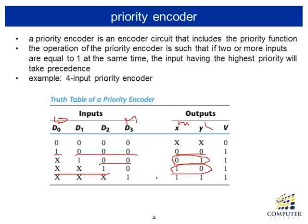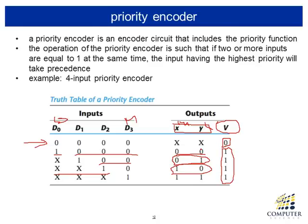That is how the priority encoder works. There is a special case that never occurs in the general encoder: since output 00 represents that d0 has a one, if the input does not have any ones at all, that is a very special case and we cannot indicate it with just the two outputs. So we have another special status output called 'valid'. The valid signal indicates whether the input has at least one one — valid equals zero means there are no ones on the input side, and when valid is one, the output xy has meaning; otherwise it does not.